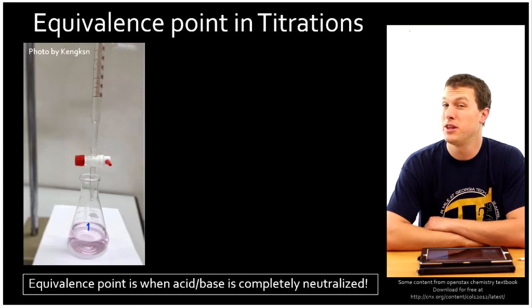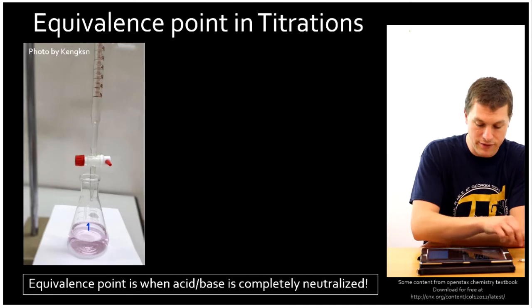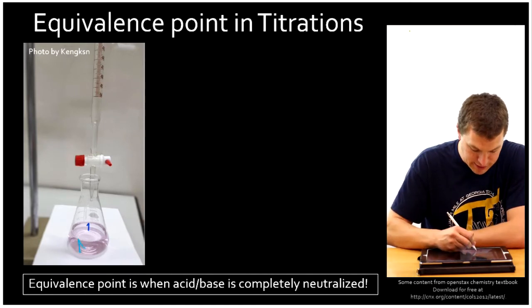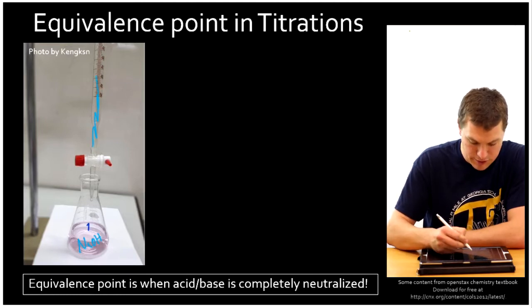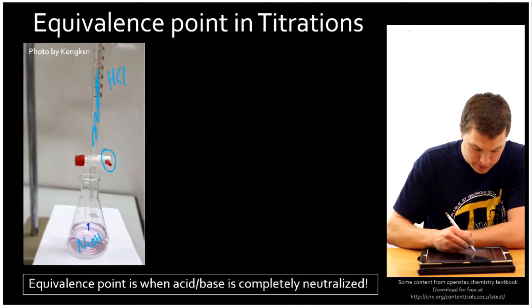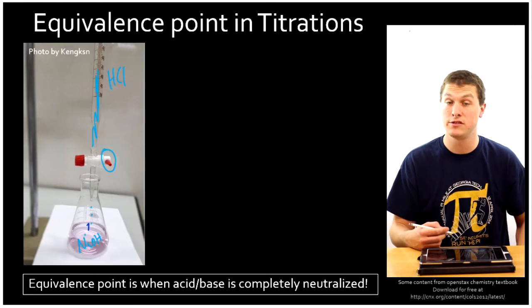Titrations are a way to determine the concentration of an acid or base when you don't know it. So here we have a titration set up, and you might have sodium hydroxide down here in the bottom, and HCl up here in this burette. And we'll use this valve to slowly release HCl down into sodium hydroxide. What happens when HCl hits sodium hydroxide?